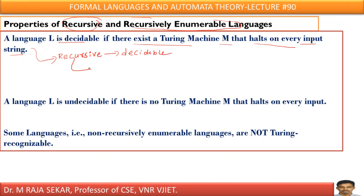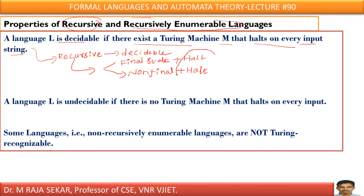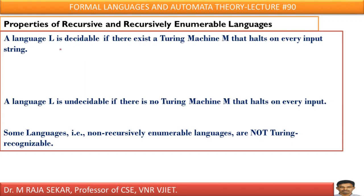In the case of recursive language, there may be two possibilities. Your Turing machine may reach a final state and halt, or your Turing machine may reach a non-final state and halt. In the case of recursive language, there is a halt mechanism — whether your Turing machine accepts or does not accept an input string, it always halts. If it halts, I can say it is decidable. A language L is decidable if there exists a Turing machine M that halts in the case of recursive language.